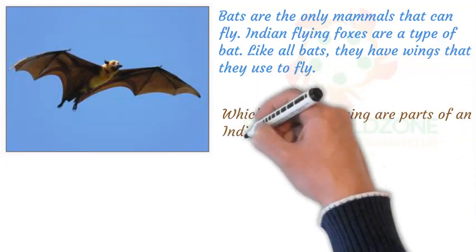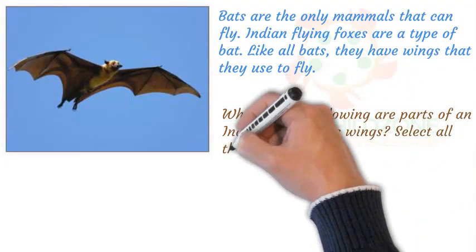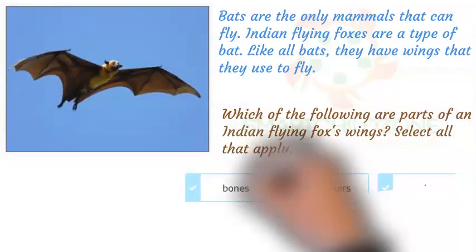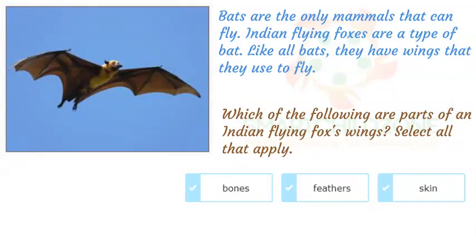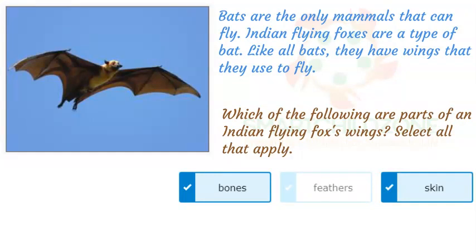Which of the following are parts of an Indian flying fox's wings? Select all that apply. An Indian flying fox's wings are made of skin, muscle, and bone. You can see the outline of the bones in the flying fox's wings. Birds and Indian flying foxes both have wings, but birds have feathers on their wings while Indian flying foxes do not.